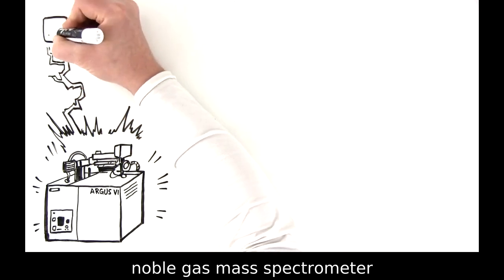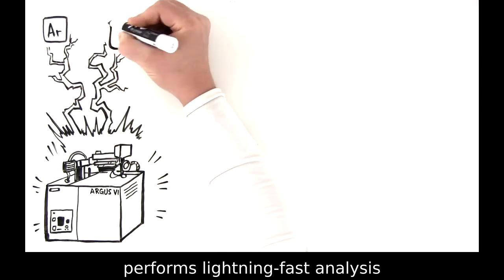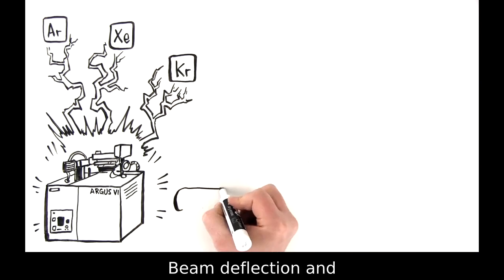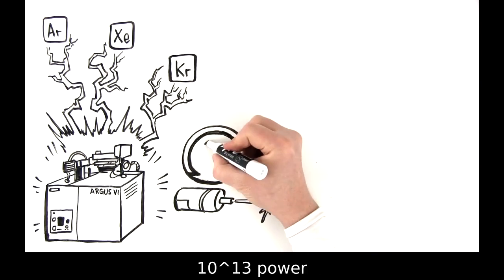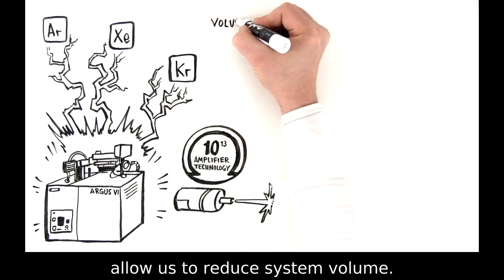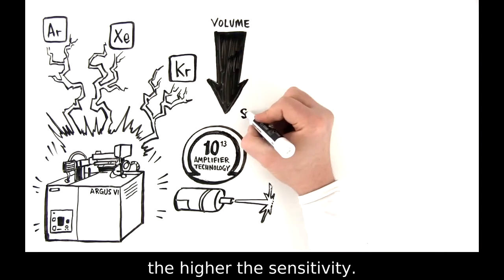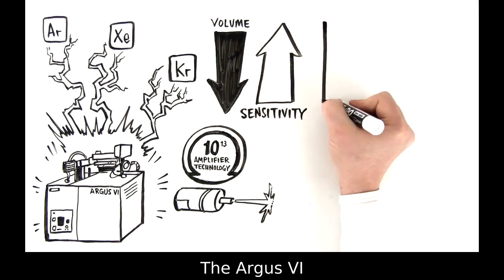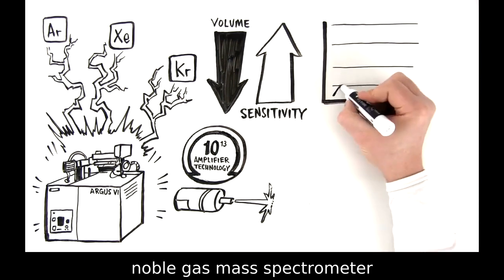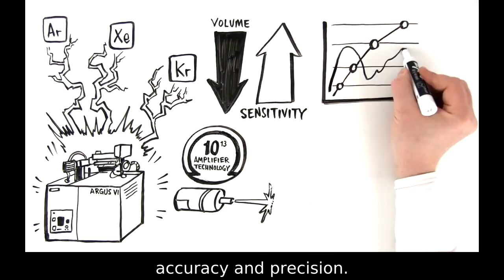The Argus 6 noble gas mass spectrometer performs lightning-fast analysis of noble gas isotopes. Beam deflection and 10 to the 13th power ohm amplifier technology allow us to reduce system volume. The lower the volume, the higher the sensitivity.